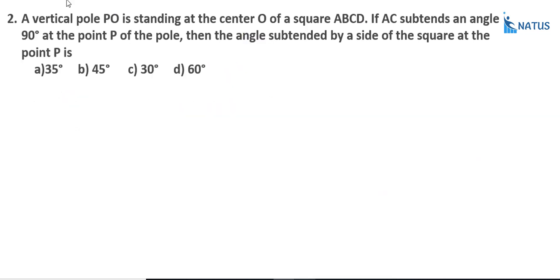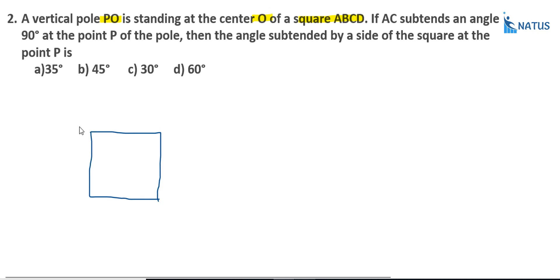Question two: a vertical pole PO standing at the center O of a square ABCD. Here is the square ABCD with center O, and P is the top of the vertical pole. If AC subtends an angle of 90 degrees at point P, what is the angle subtended by a side of the square at point P?